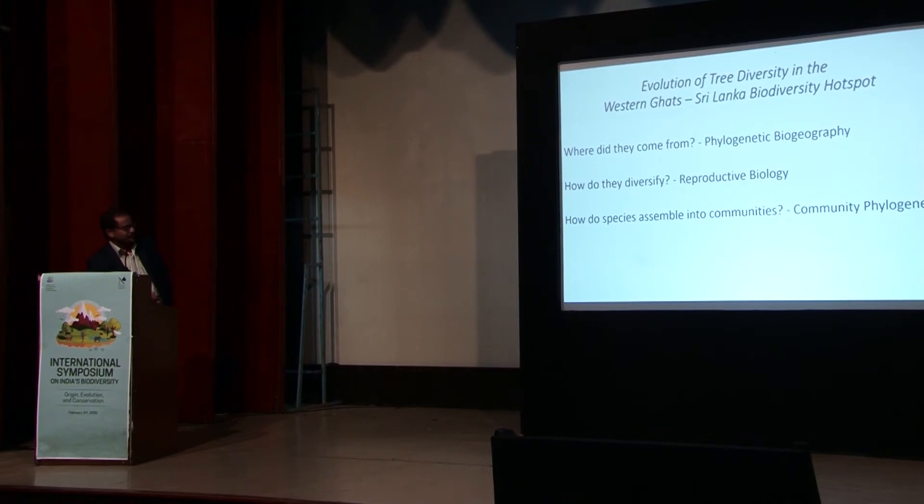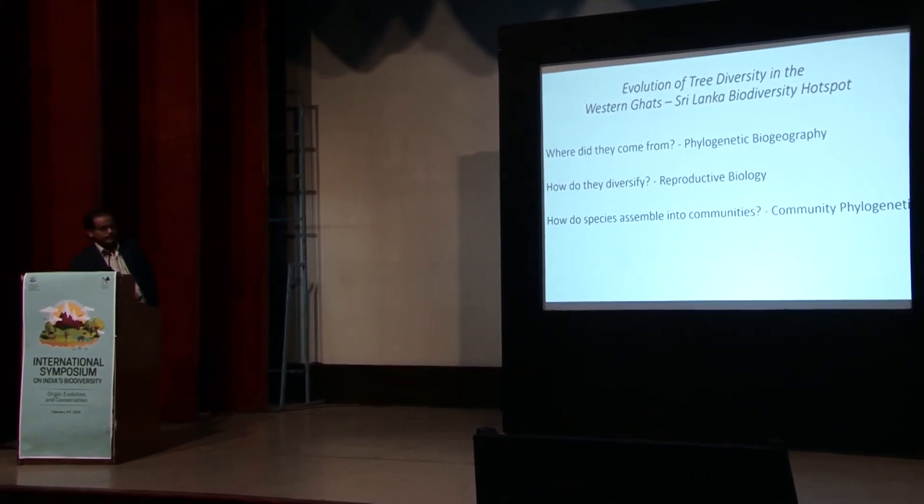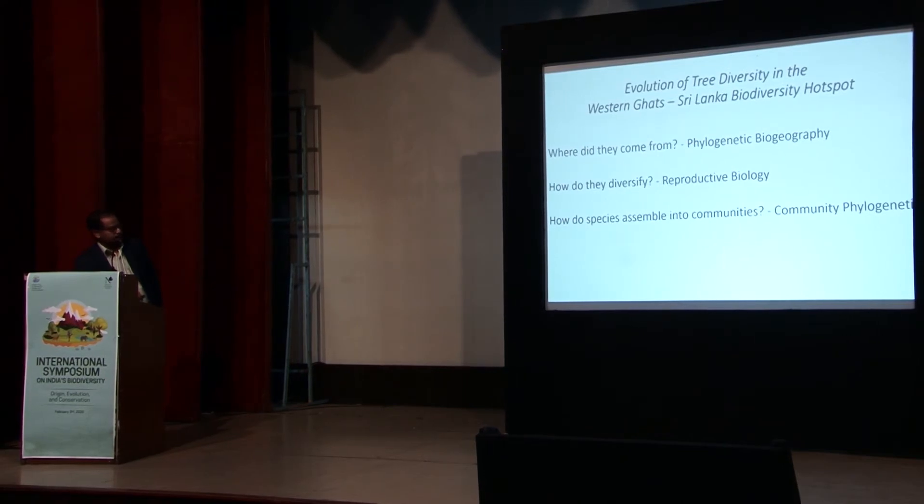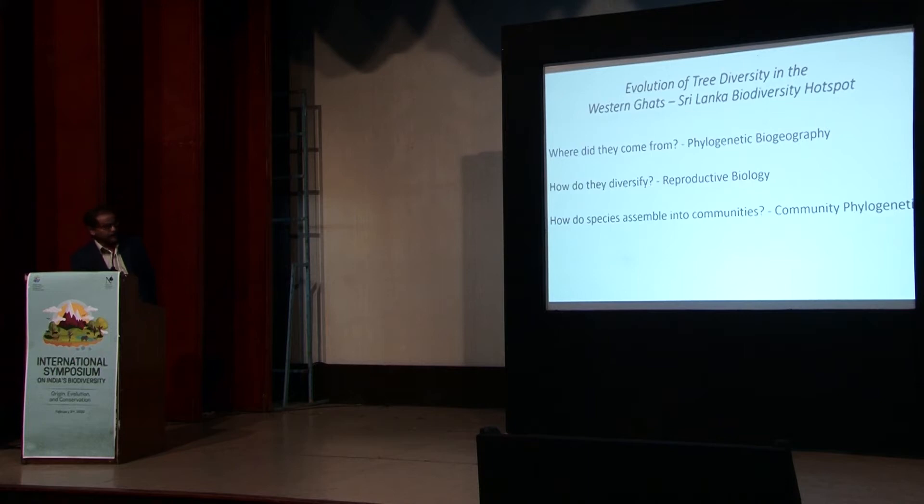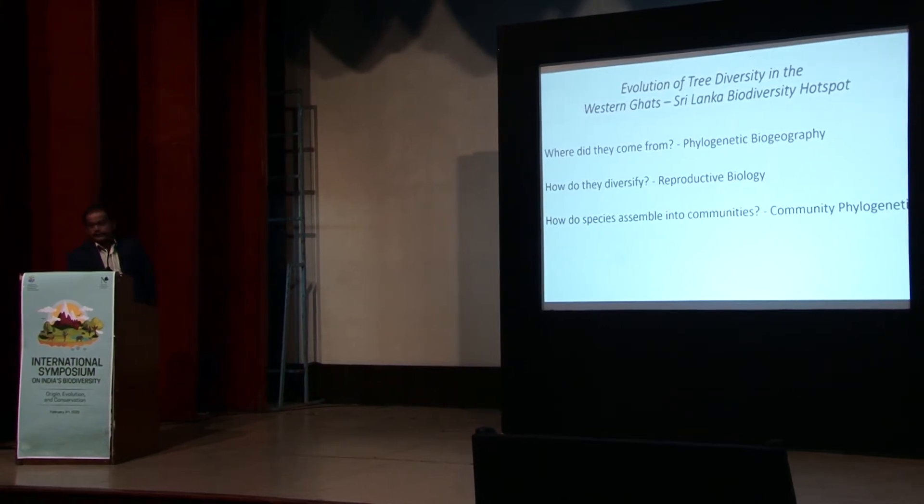Actually, I'm going to be focusing on three questions. The first is, where did they come from? So that question is being technically addressed through phylogenetic biogeography. And then, how do they diversify? So mostly based on the reproductive biology. And then, how do species assemble into communities? It's called community phylogenetics.